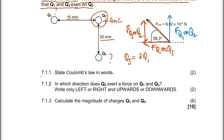For 7.1.1, it says state Coulomb's law in words — check the exam guideline for that. For 7.1.2, it asks: in which direction does Q2.2 exert a force on Q2.1, and in which direction does Q2.2 exert a force on Q2.3?